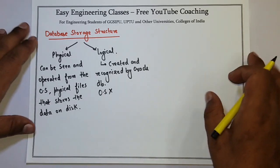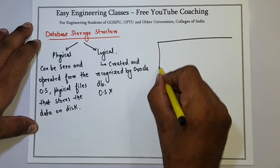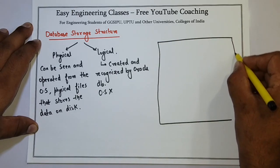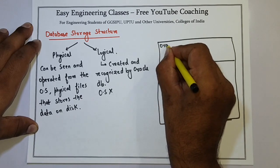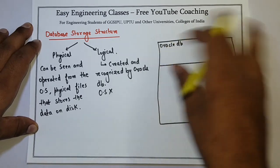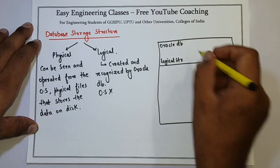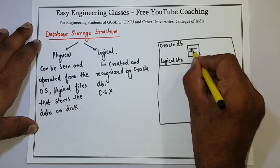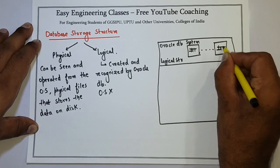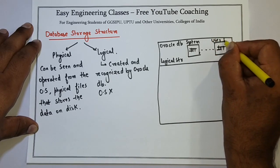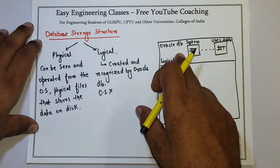There is one important diagram related to this topic of database storage structure. There are basically three levels. The first is the complete Oracle database. The first layer is the logical structure. In the logical structure, you have different tables present in the database — for example, system tables and user tables. There are many tables present in the logical layer, ranging from system to user tables.